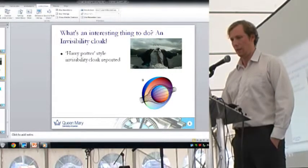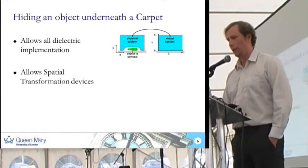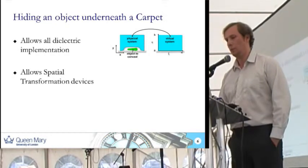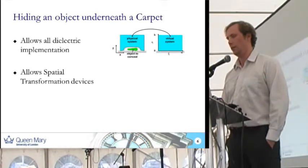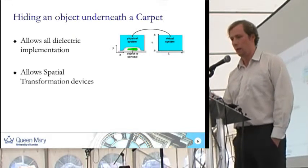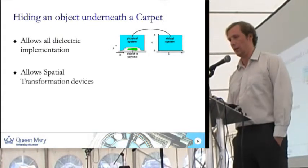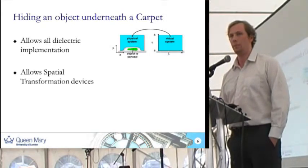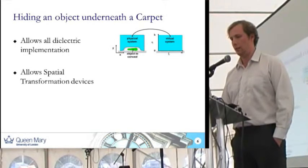Cloaking is invisible. An innovation in the cloaking field, which I've done my PhD on, is to cloak something underneath a carpet — it's called hiding something under a carpet. This is possible using an all-dielectric implementation. So instead of using anisotropic materials, you would use isotropic materials made of a single block of dielectric.